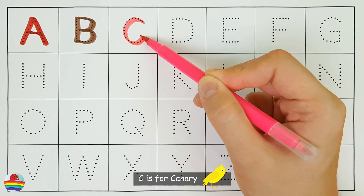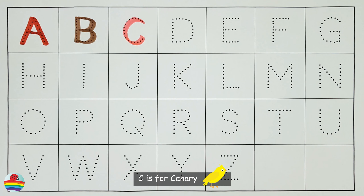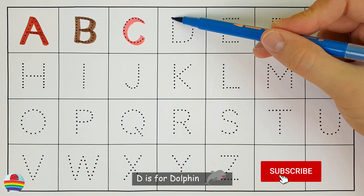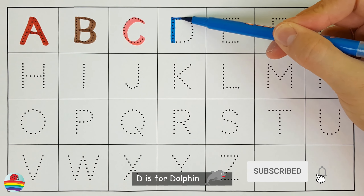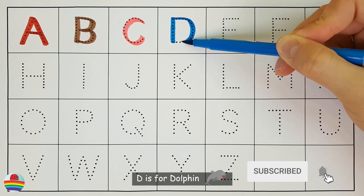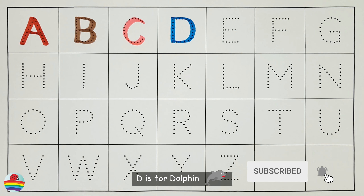A is for ant. B is for butterfly. C is for canary.